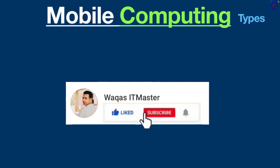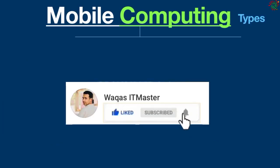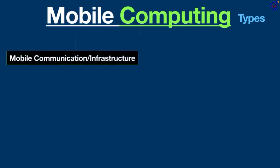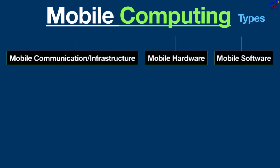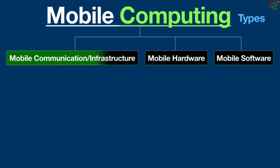Now, what are the types of mobile computing? It has three types: mobile communication or infrastructure, mobile hardware, and mobile software. These types are also known as the major components of mobile computing. Let's discuss them one by one.